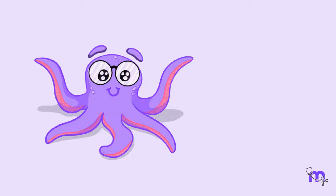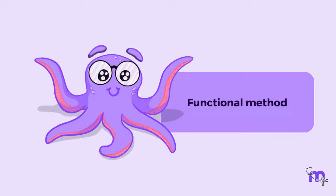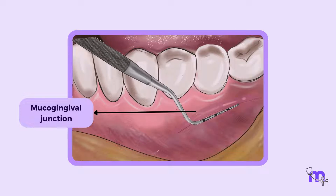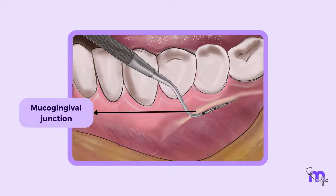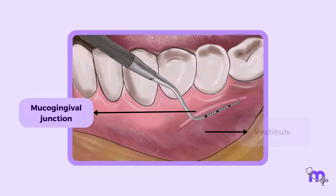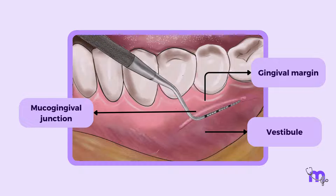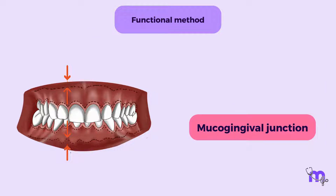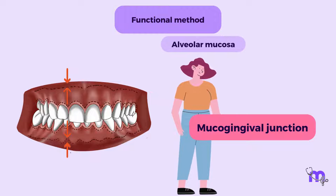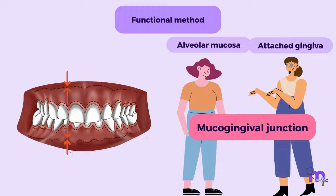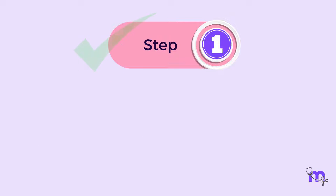Now, let us talk about how we determine the mucogingival junction using the functional method. The mucogingival junction can be located by running a horizontally placed probe from the vestibule to the gingival margin using light force, because the mucogingival junction is the junction where the movable alveolar mucosa meets the immovable attached gingiva. That covers step 1.